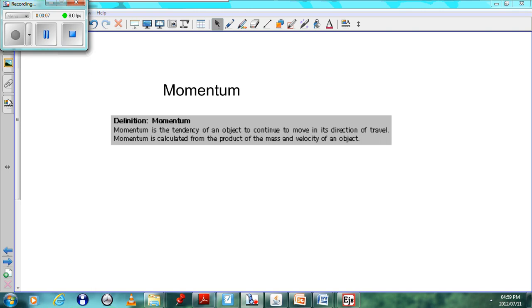Momentum is defined as the product of the mass of an object and its velocity. I'll just read out this definition here. Momentum is the tendency of an object to continue moving in its direction.